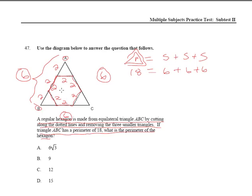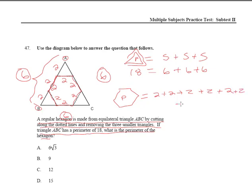So when we add up all of these 2's for our hexagon — 2 plus 2 plus 2 plus 2 plus 2 plus 2 — when you add them all together, you get 12. That's answer C. That's how you do that one.